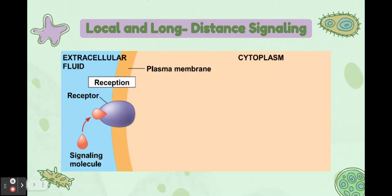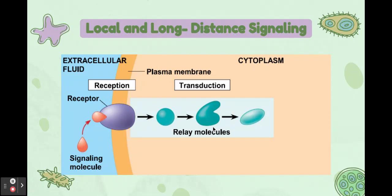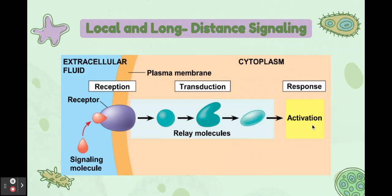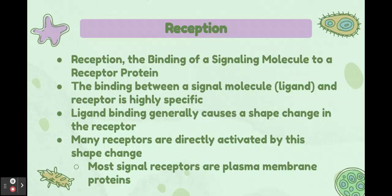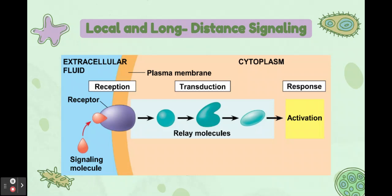In the first step, reception, the signaling molecule — also known as a ligand — binds to a receptor molecule. Reception is the binding of a signaling molecule to a receptor protein. The binding between the ligand and the receptor is highly specific, causing a shape change in the receptor. Many receptors are directly activated by this shape change, and most signal receptors are plasma membrane proteins.